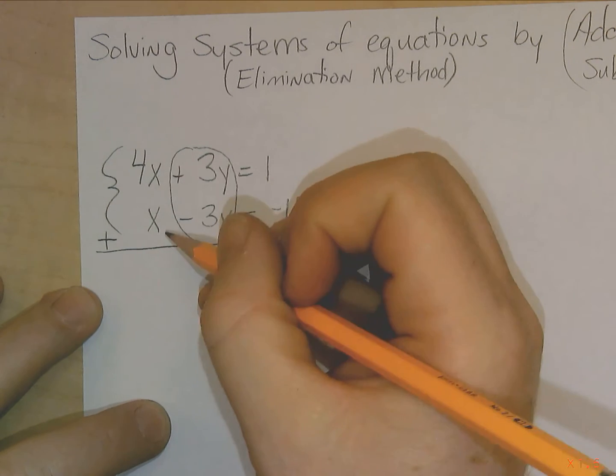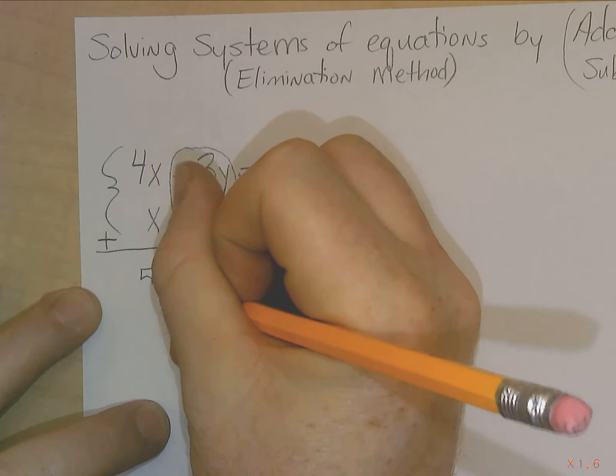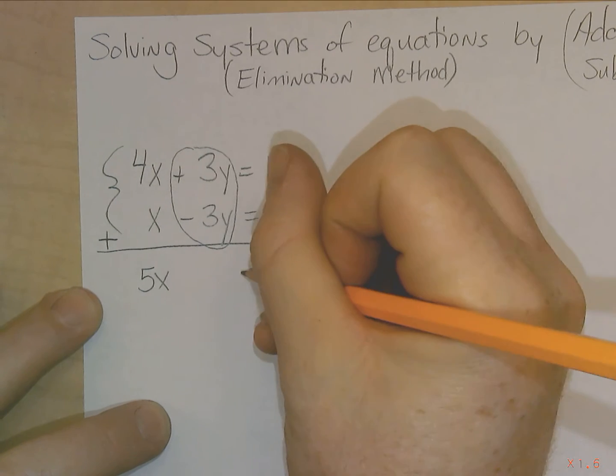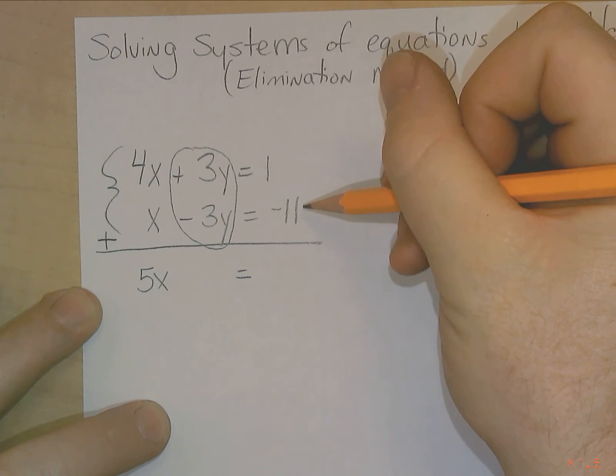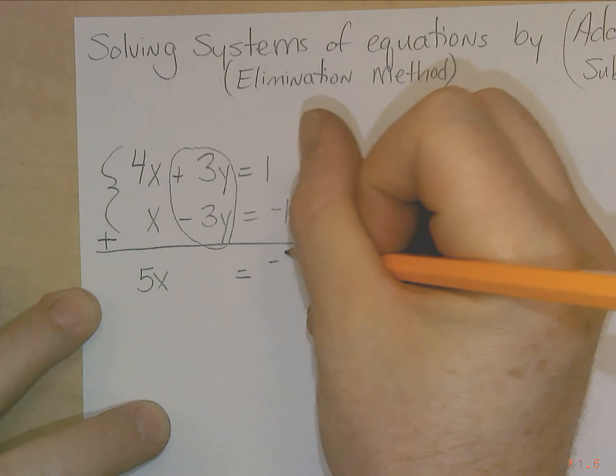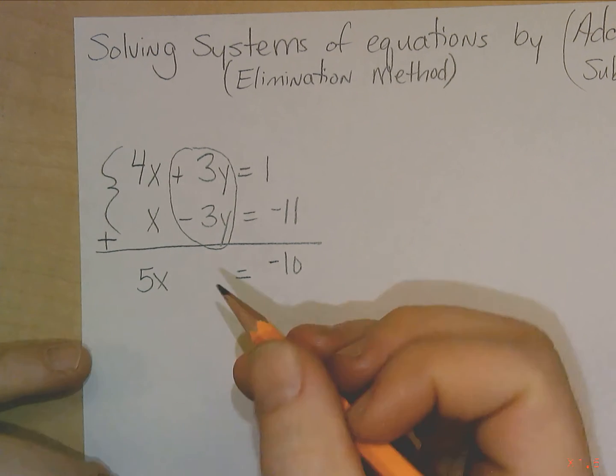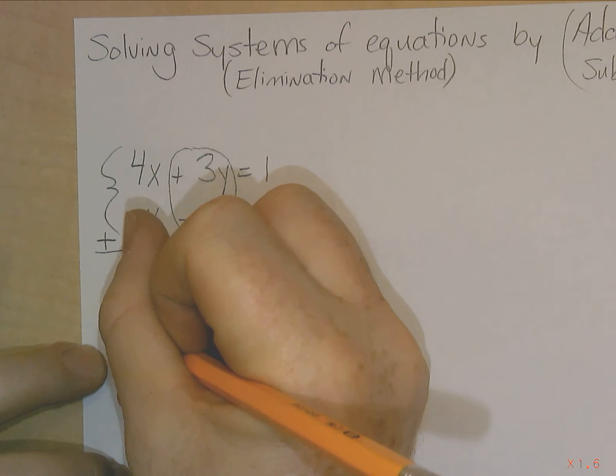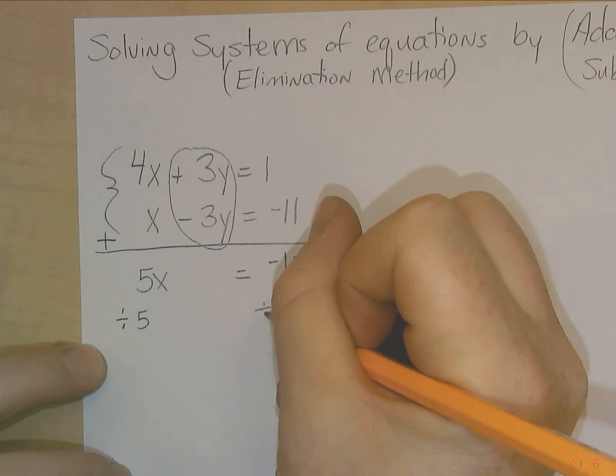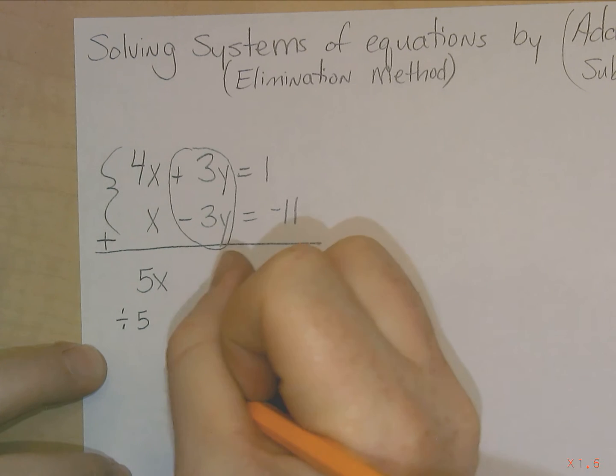And then all you have left is 4x plus x, which is 5x. 1 plus negative 11 is negative 10. And then you would just solve it as a one-step equation. So we would just divide both sides by 5, and then we get x equals negative 2.